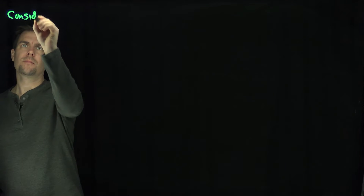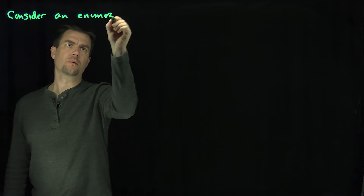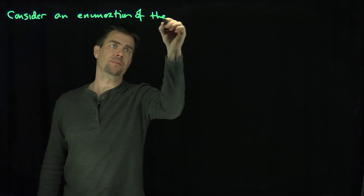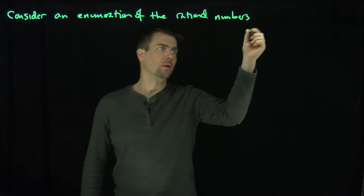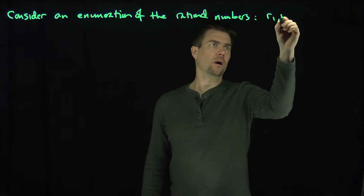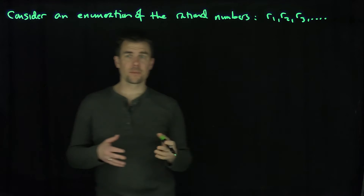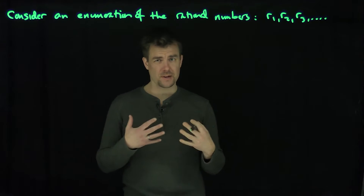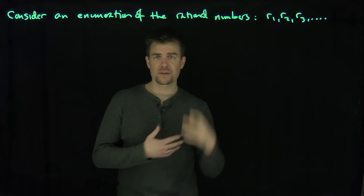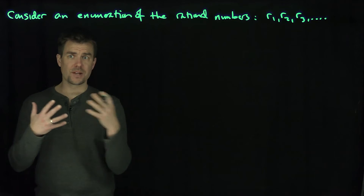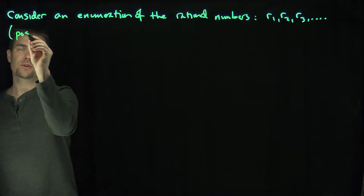Let's consider an enumeration of the rational numbers: r1, r2, r3, and so on. This is going to be a wild thing because the rational numbers are dense, so such an enumeration exists because they're countable. The order is not necessarily a pure ordering based on the index because of how dense the rationals are. This is possible since the rational numbers are countable.